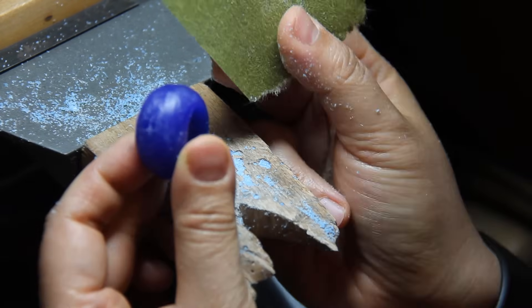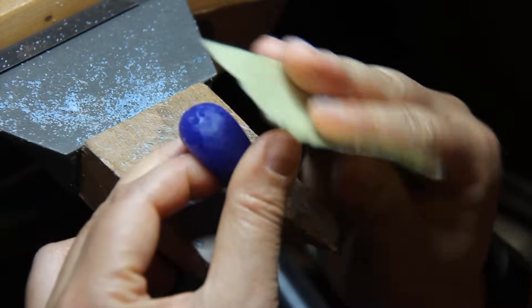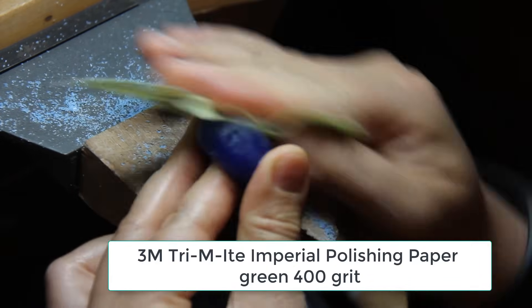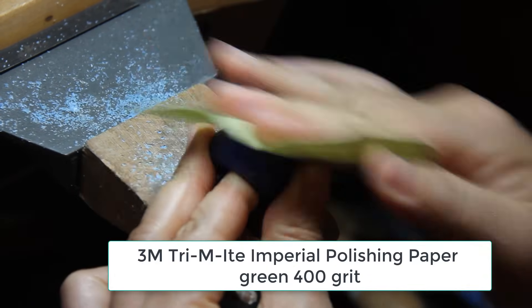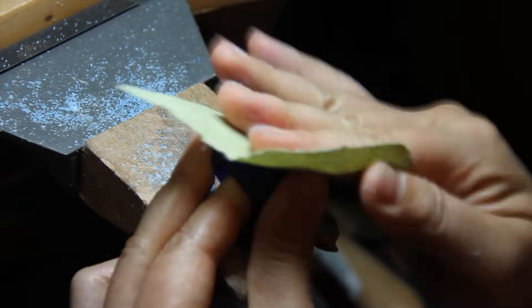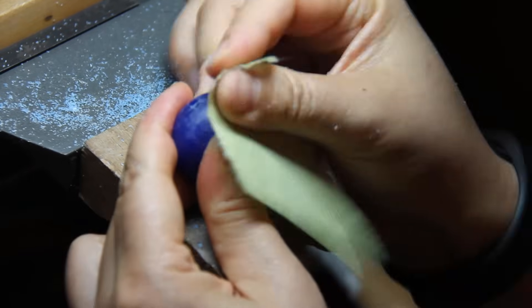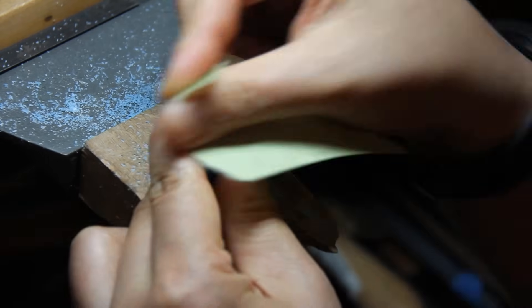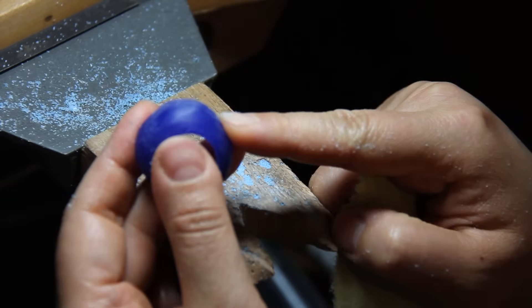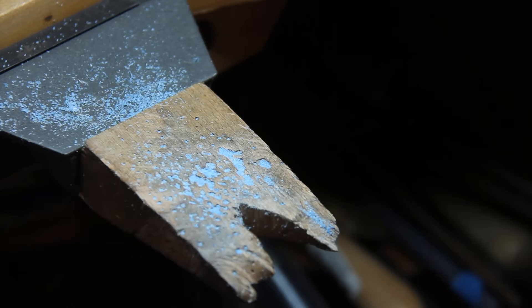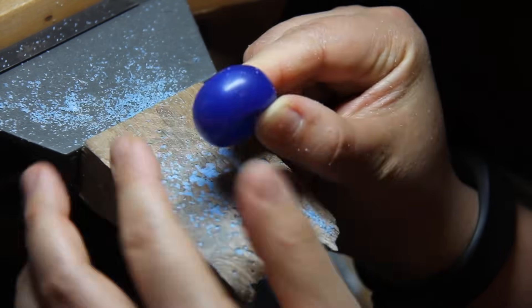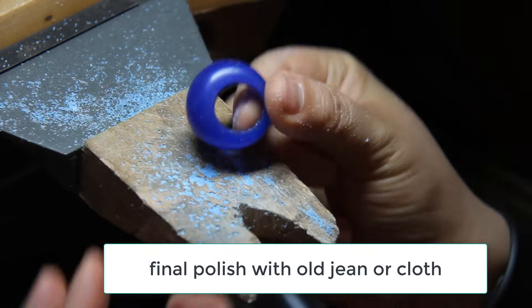The very last step, I want to use microfinish paper. On this one is green, it's about 400 grit, and I try to smooth it out. If you use too fine of the paper, it's gonna take a really long time, and the wax is gonna clog it. I find this green color microfinish paper works really fine, and after that you can polish on your jeans, rub on any cloth, and they will get really shiny.